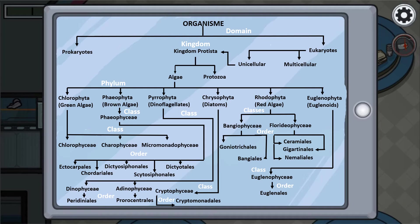For the phylum chrysophyta, also known as diatoms, it has one class which is cryptophyciae, and under that class is the order cryptomonadales. For rhodophyta, also known as red algae, it is divided into two classes: bangniophyciae and floridiophyciae. Under bangniophyciae are two orders: junio-chrycales and bagniales. For the class floridiophyciae, it has three orders: ceramiales, gigartineals, and nemaliels.